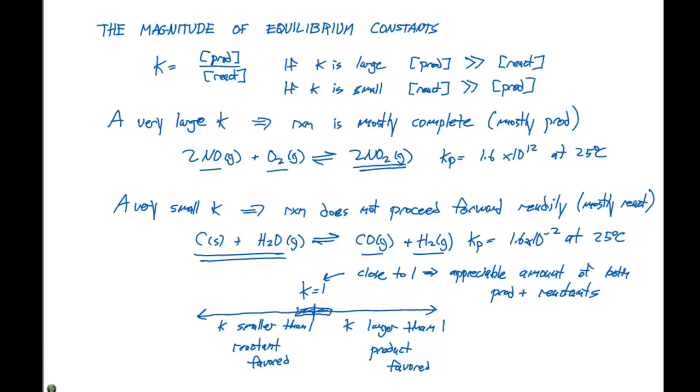But over here, with values that are less than 0 or values that are greater than 10, we can definitely for certain say that we have either products favored or reactants favored.